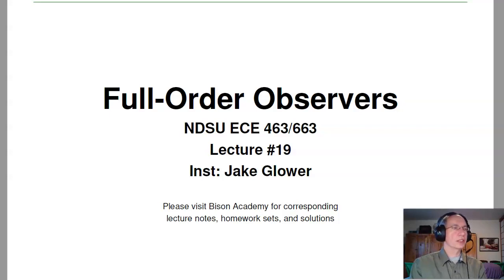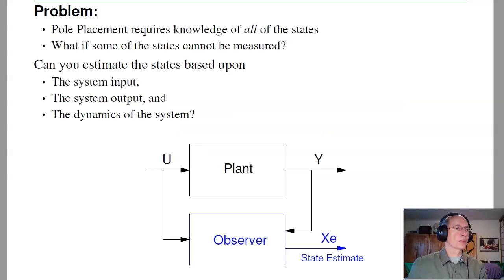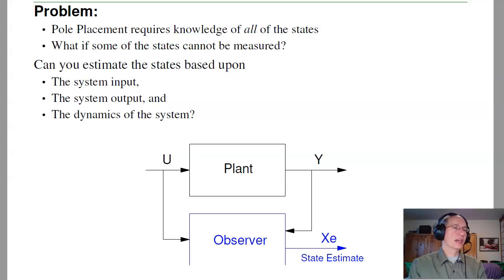Welcome to lecture number 19 for ECE 463 Modern Control, Full Order Observers. Here's a problem: pole placement requires knowledge of all the system states. What if you can't measure some of the states?